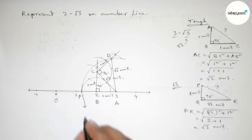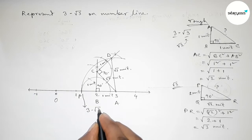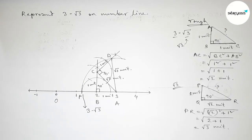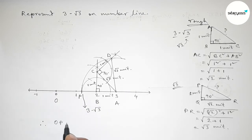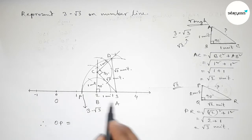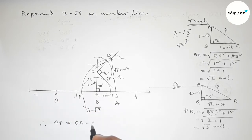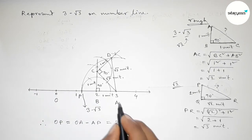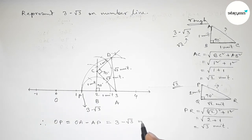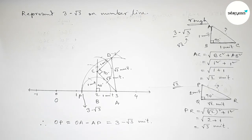This is obviously 3 minus root 3 on the number line. Therefore OP equals OA minus AP, where OA equals 3 and AP equals root 3 unit, so OP equals 3 minus root 3 unit. That's all — thanks for watching. If this video is helpful to you then please like and share.